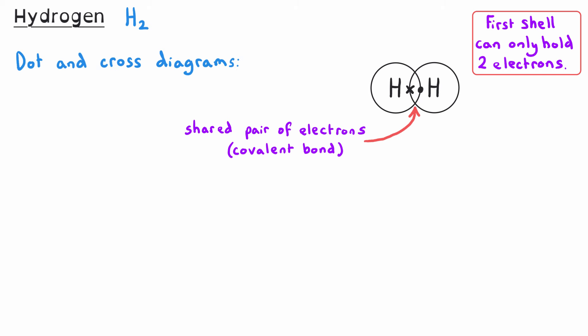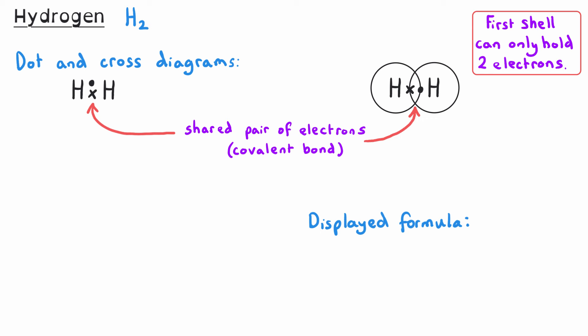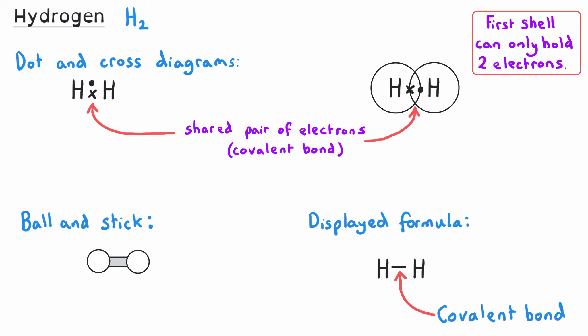We can show this as a simpler dot and cross diagram by removing the electron shells and leaving just the shared pair of electrons. Both diagrams are valid in an exam and both show the covalent bond. In a displayed formula, only the shared electrons are represented — as a line — so hydrogen is shown as H–H. A ball and stick diagram uses white circles for hydrogen atoms connected by a stick representing the covalent bond.